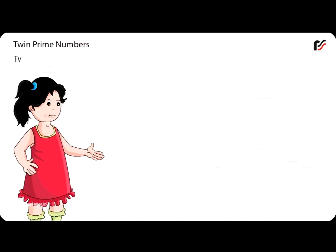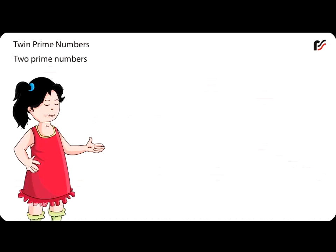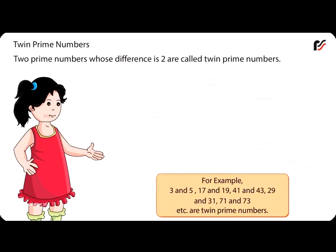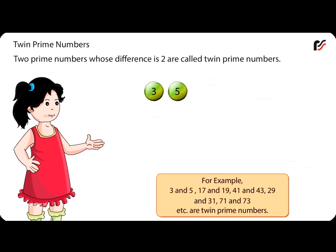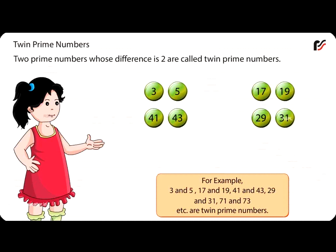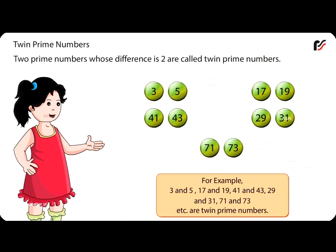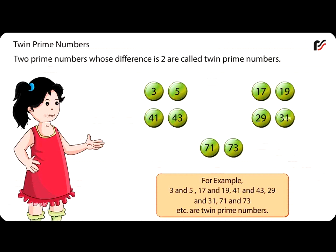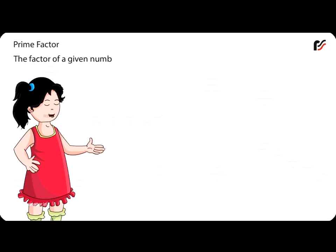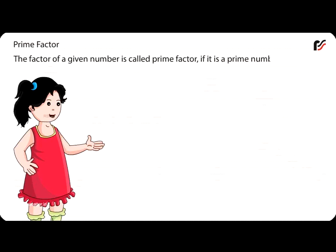Twin Prime Numbers: Two prime numbers whose difference is 2 are called twin prime numbers. For example, 3 and 5, 17 and 19, 41 and 43, 29 and 31, 71 and 73, etc. are twin prime numbers. Prime Factor: The factor of a given number is called a prime factor if it is a prime number.